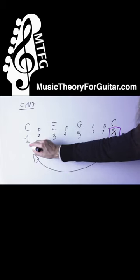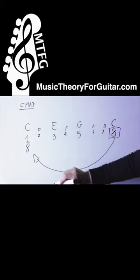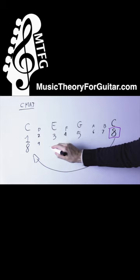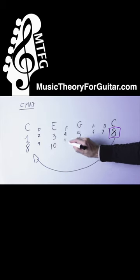So let's just write an 8 under the first C, and then if we keep counting, under the E we should write a 10, and under the G we should write a 12.